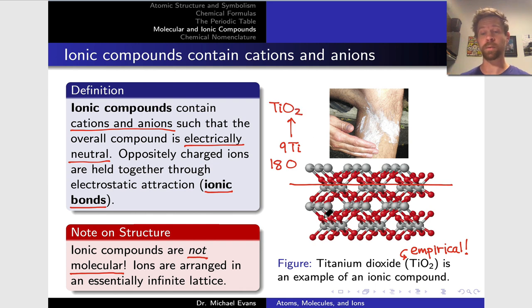So despite the way we write the formula this does not mean that TiO2 consists of discrete titanium dioxide molecules. Titanium and oxygen ions are arranged in an infinite lattice and held together through electrostatic attraction in this ionic compound.